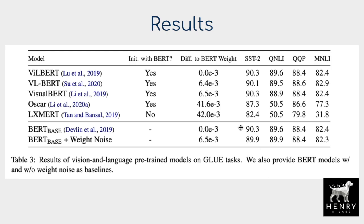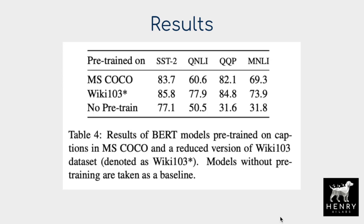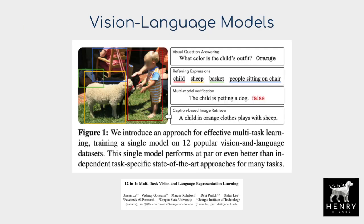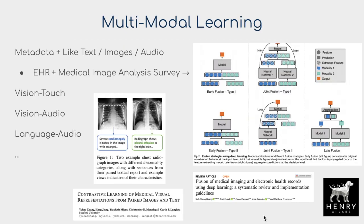A note: the authors couldn't reconstruct the exact dataset used to pre-train BERT in the original paper, so the baseline BERT results are slightly lower than originally reported. Another table shows an interesting result on form distribution: doing masked language modeling on Wiki-103 truncated to the same size as MS COCO shows a big gain for Wiki-103, because image captions like 'a child in orange clothes plays with sheep' use language far more naively than Wikipedia text.